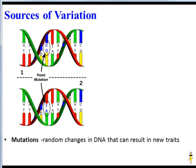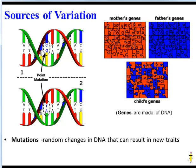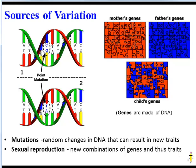These changes are usually random — they're not purposeful, and they're not in response to a certain need in the environment. Another source of variation is sexual reproduction, because during sexual reproduction, the genes from the mother and the genes from the father get shuffled and combined in the child. So the child has a new combination of genes, which means a new combination of traits.